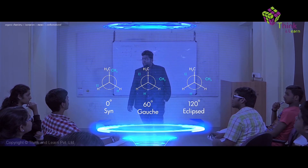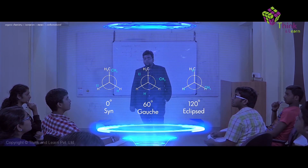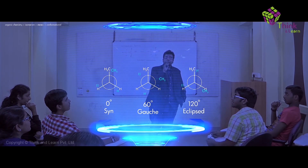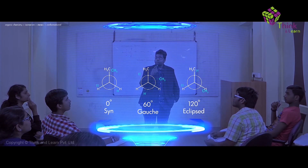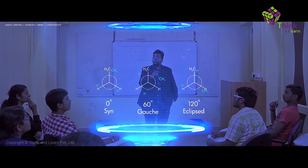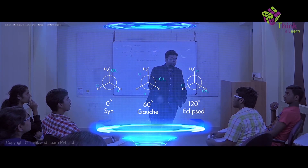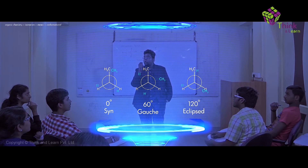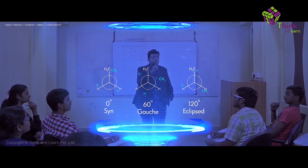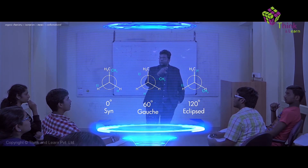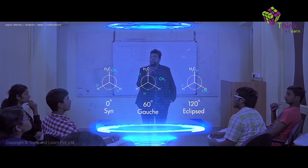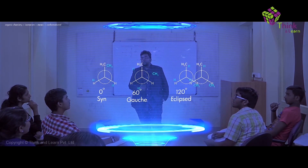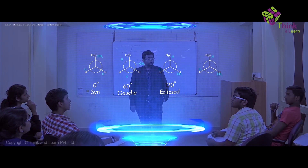If I further move it by 60 degrees, the dihedral angle becomes 120 degrees. At this point it is also called an eclipsed conformation, but this eclipsed is different from the syn conformation, because here CH3 is eclipsing a hydrogen — not CH3 eclipsing CH3.